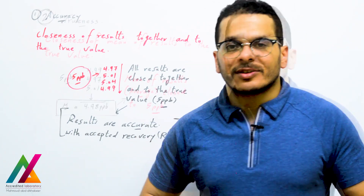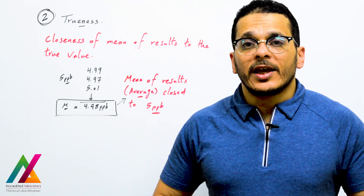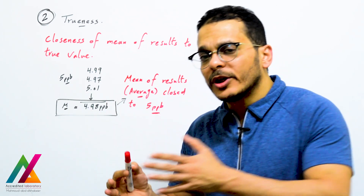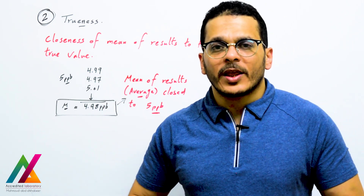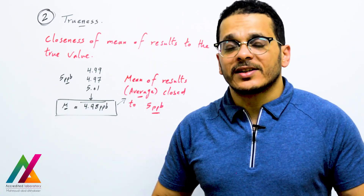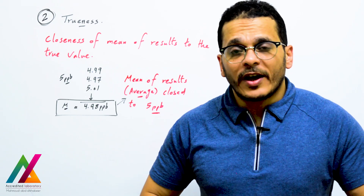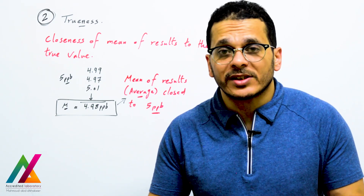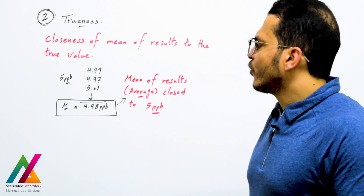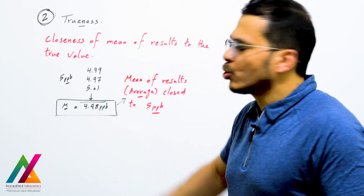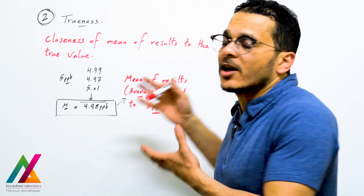Trueness, as defined in guidelines, is the closeness of the mean of results to the true value. If you spike a sample with a known concentration and perform replicate analyses, all results should be close to the true value. If any result is far from the true value, the average will be biased. For example, spiking with 5 ppb and getting 4.99, 4.97, and other results — the average was 4.98 ppb, which is close to the true value, so the results are true with no bias.